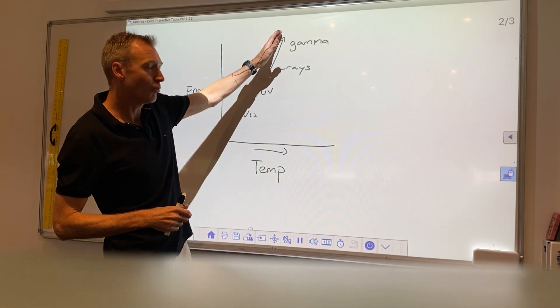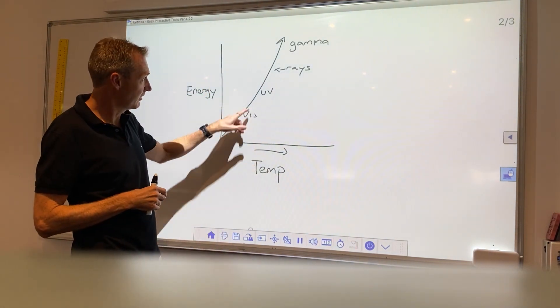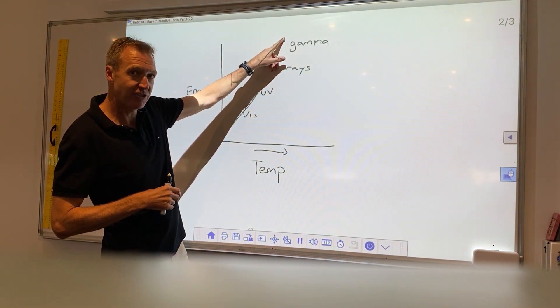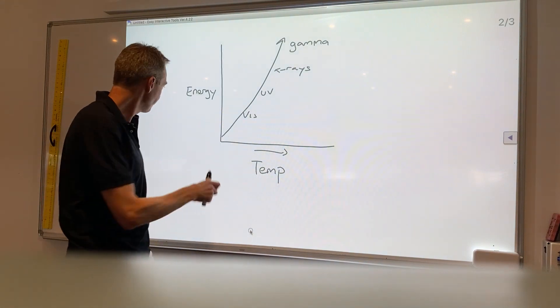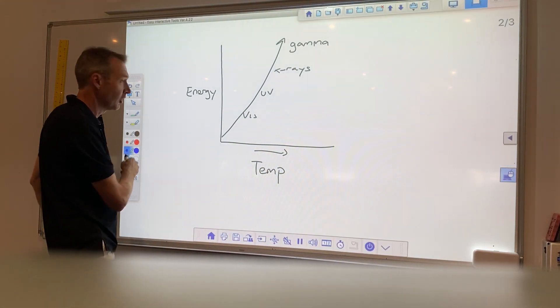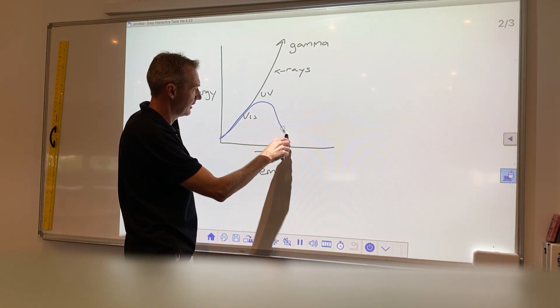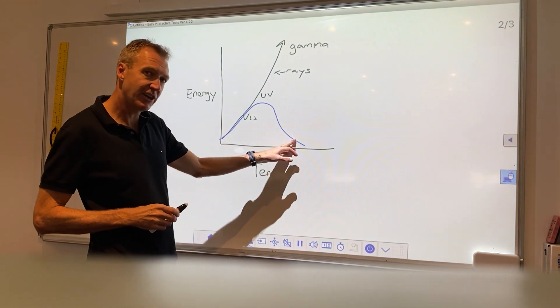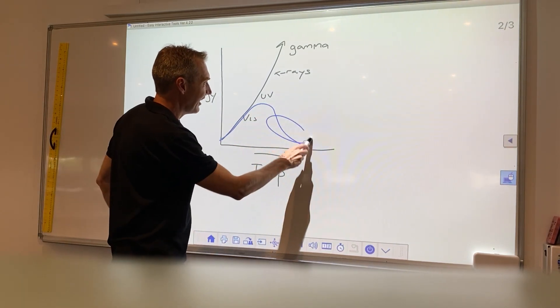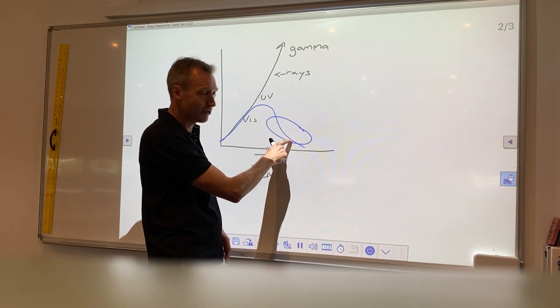That is how classical physics would have explained how atoms release energy as they increase their temperature, but this wasn't happening. What they actually saw was at higher energies, the curve started to come down, and classical physics could not explain why this curve was coming down.